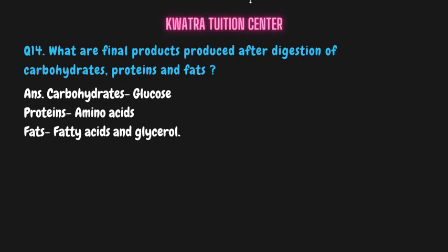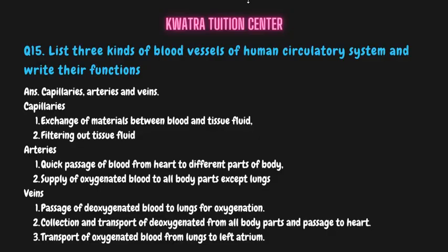Question fourteen: what are the final products produced after digestion of carbohydrates, proteins, and fats? Carbohydrates are reduced to glucose, proteins are reduced to amino acids, and fats are reduced to fatty acids and glycerol. These are the three final products after digestion.